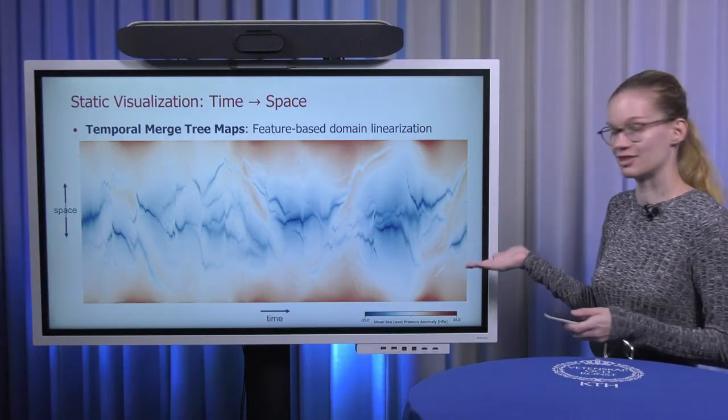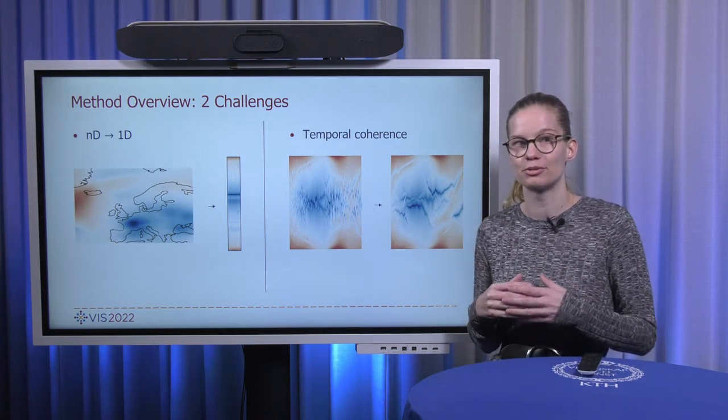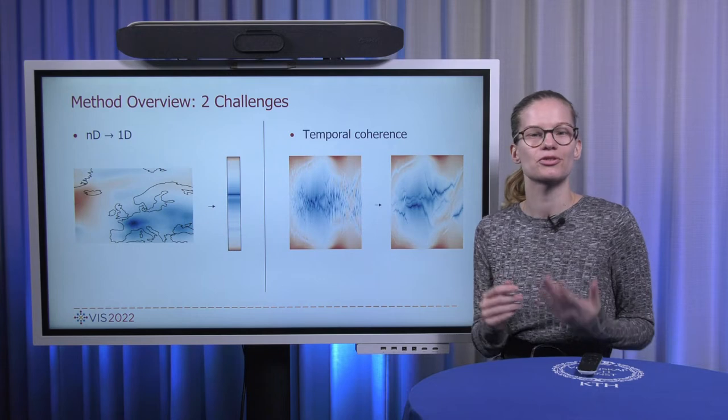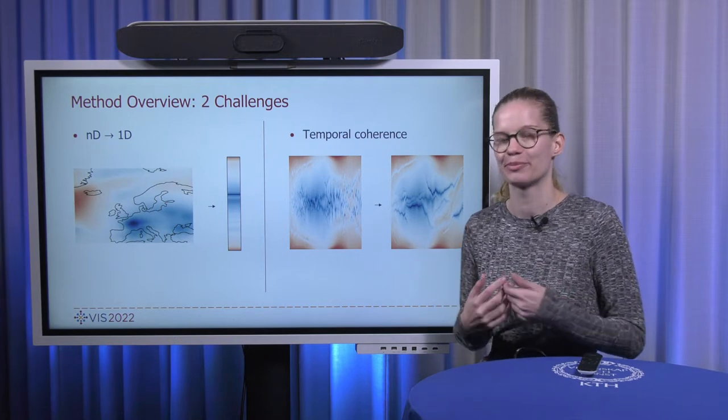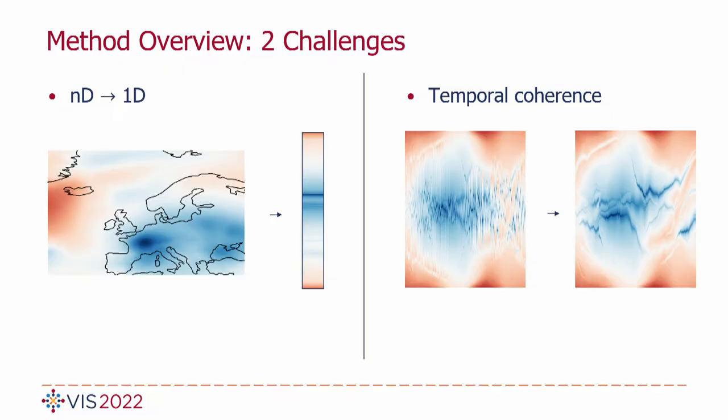But how do we get to this visualization then? Well, there are two things that we need to figure out. First off, we need to derive a mapping from our scalar field that may be in 2D or 3D to one dimension, while also retaining all of the feature and the structure that is in the data. And then things change over time, but we want our visualization to still show features in a nice coherent way. And we address both of these through an intermediate data structure, the augmented merge tree that captures features quite nicely in a hierarchical way, and by employing a greedy heuristic that relates the augmented merge trees over time and tries to align them in a good way.